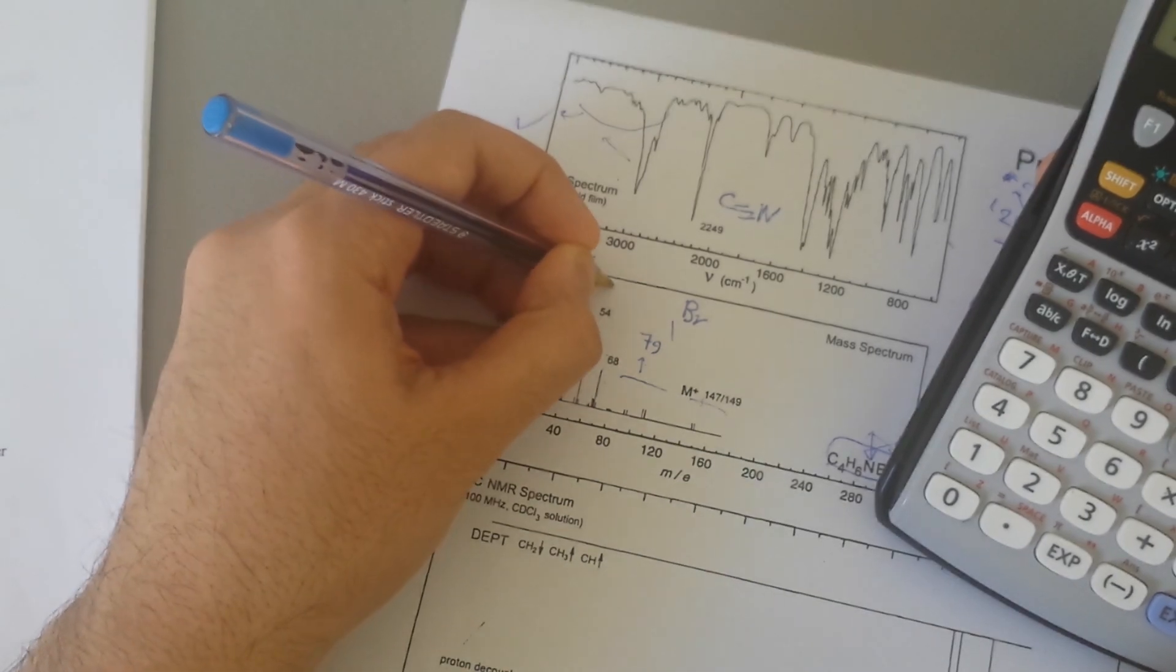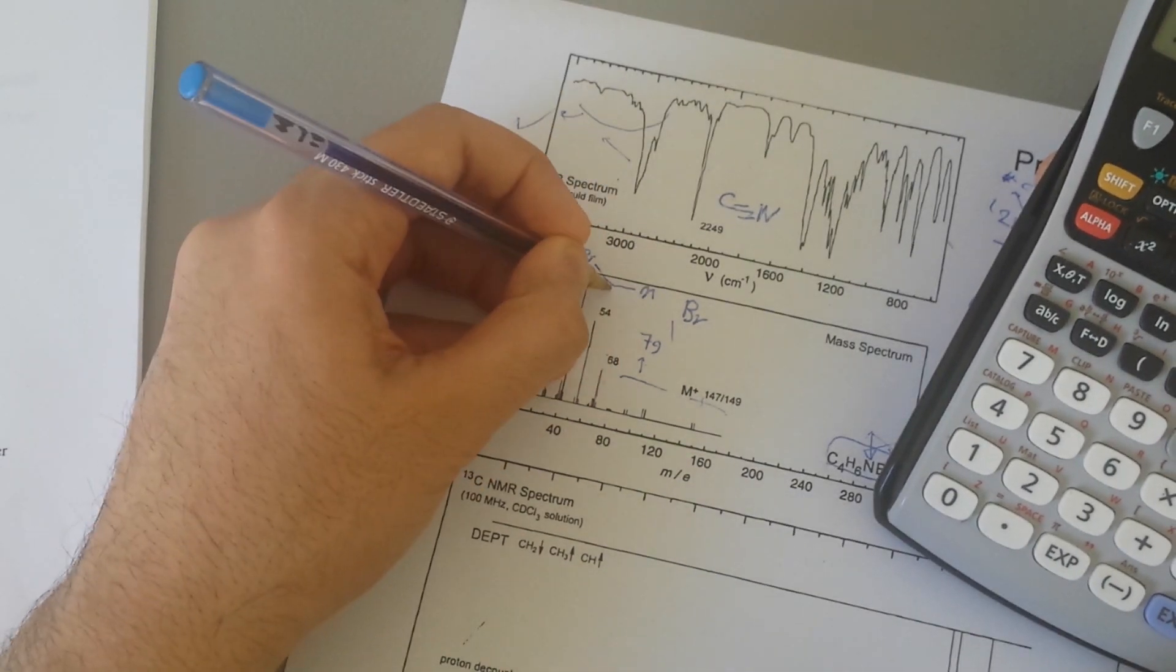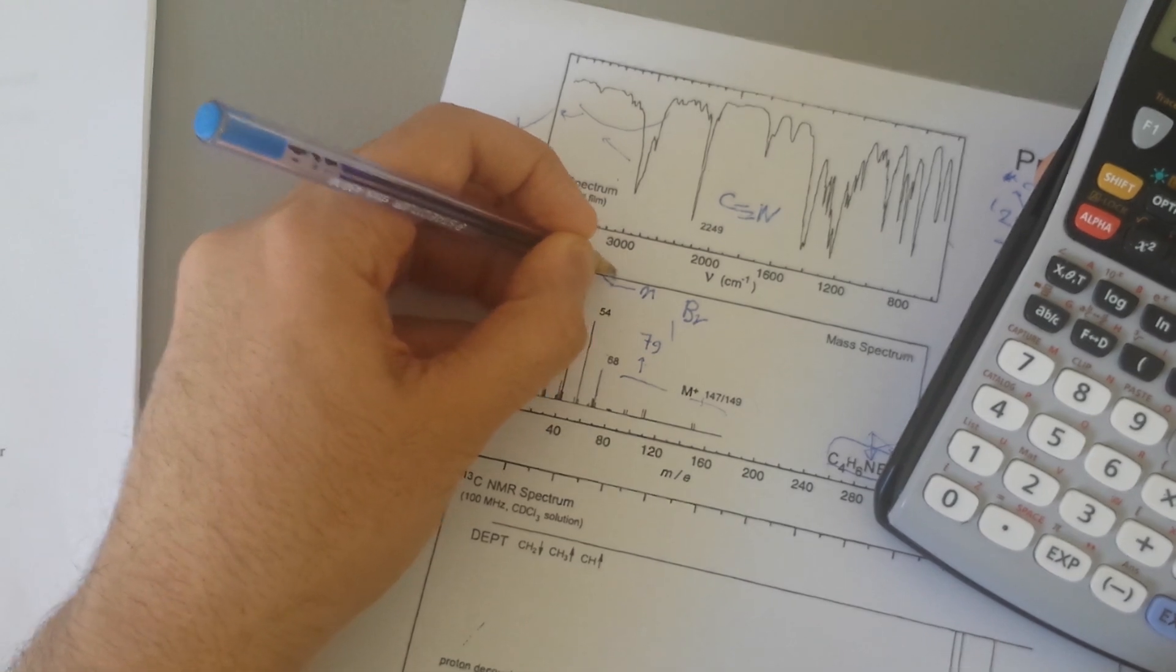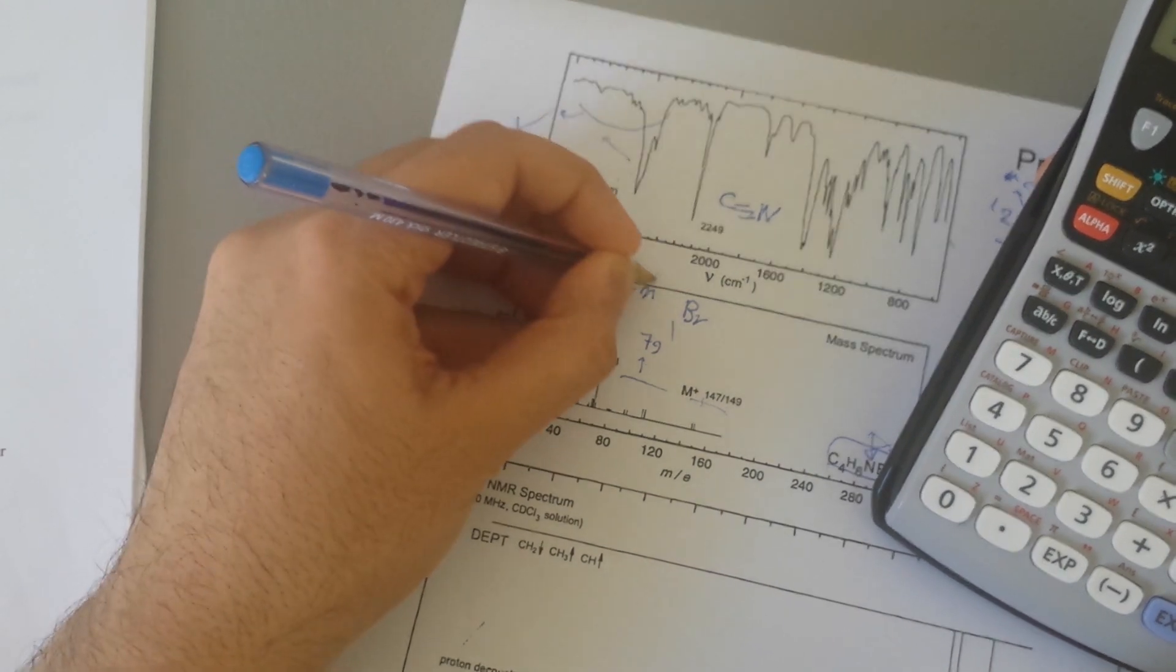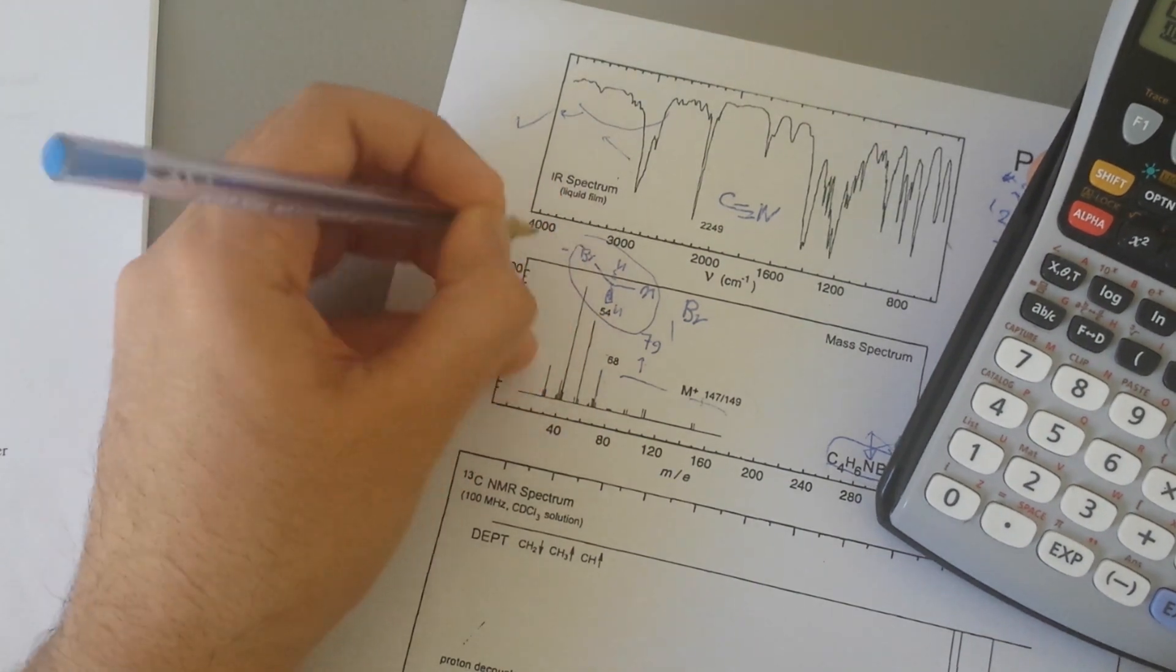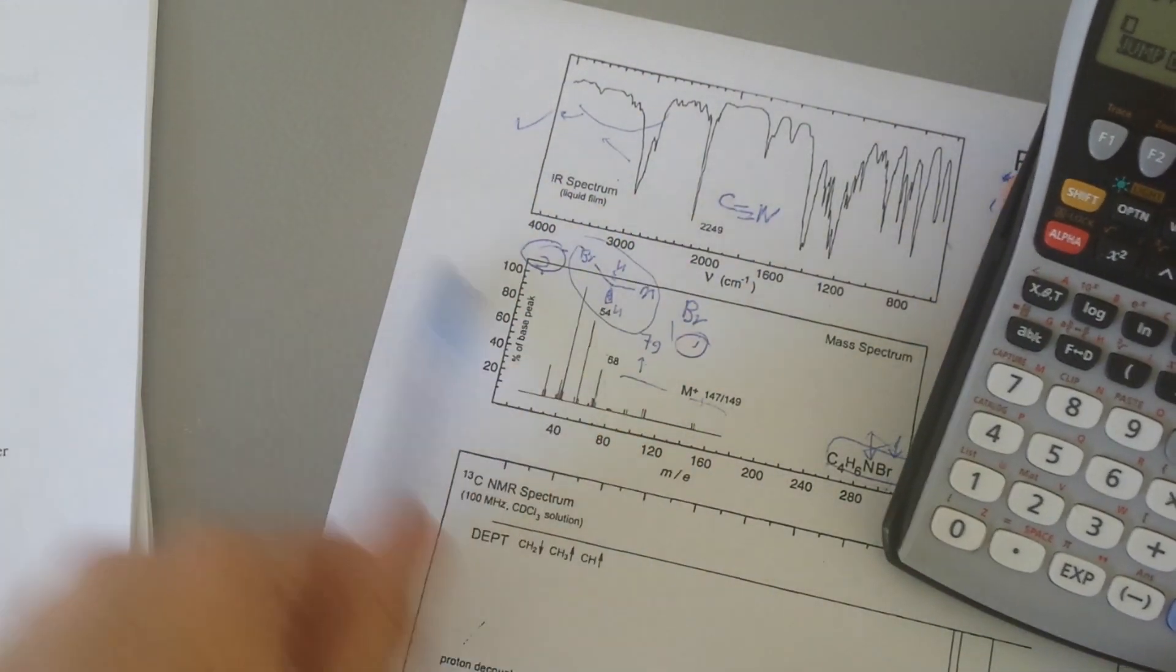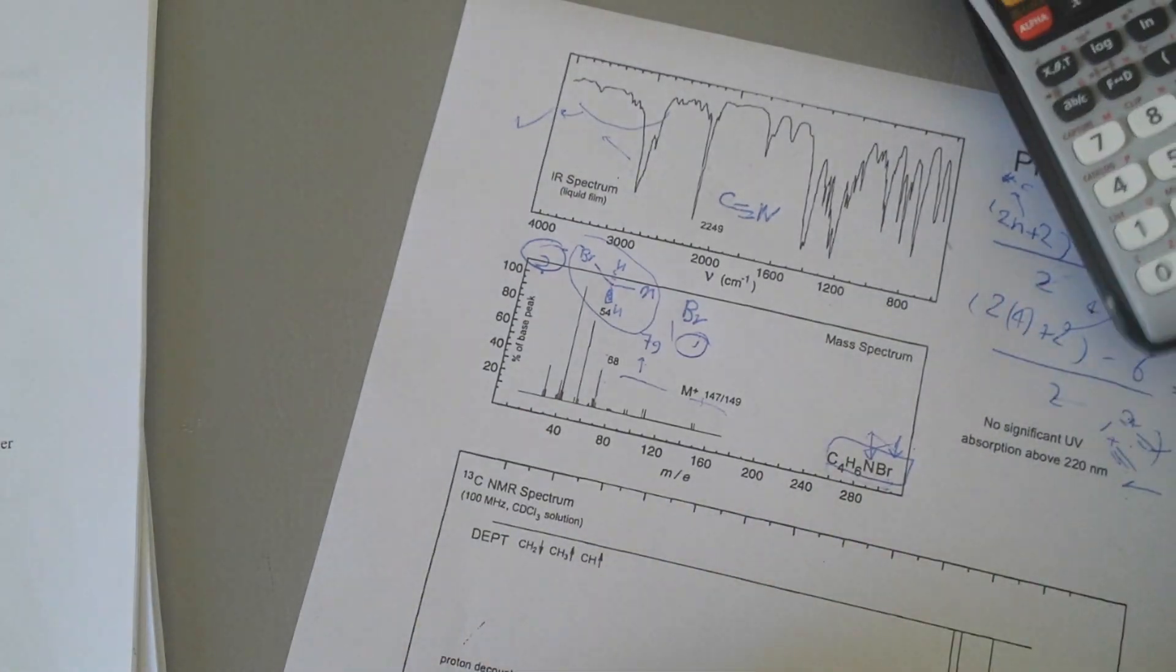This gives you something like that: bromine, X we don't know, but one hydrogen here, one hydrogen there. This is our second fragment. So we know we're dealing with this kind of thing. So let's quickly find the CNMR.